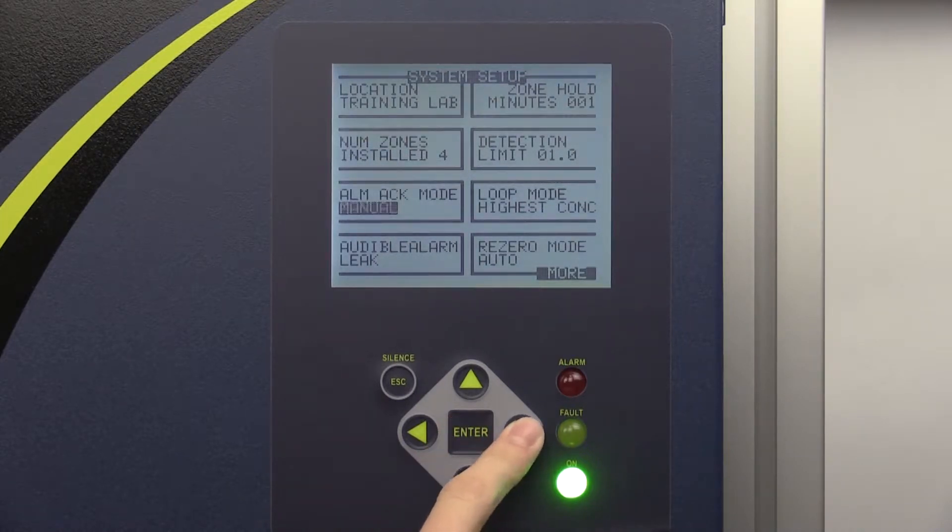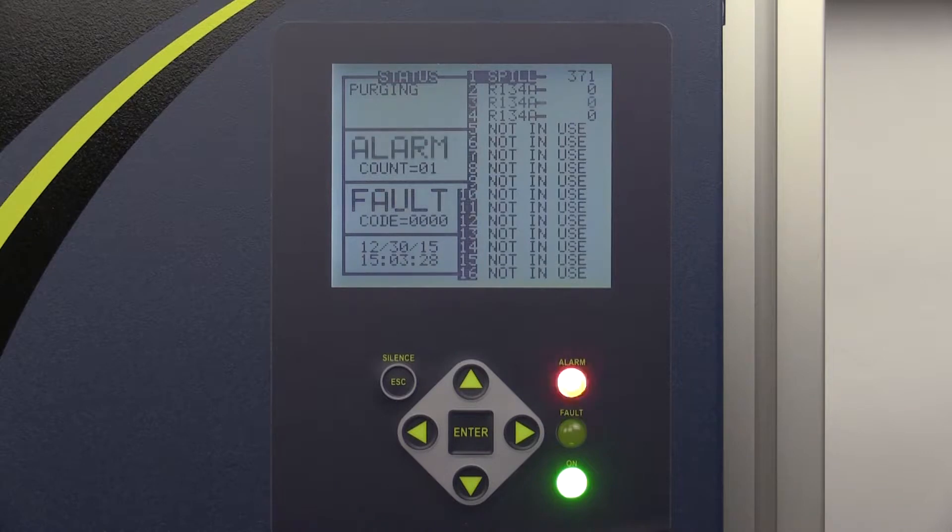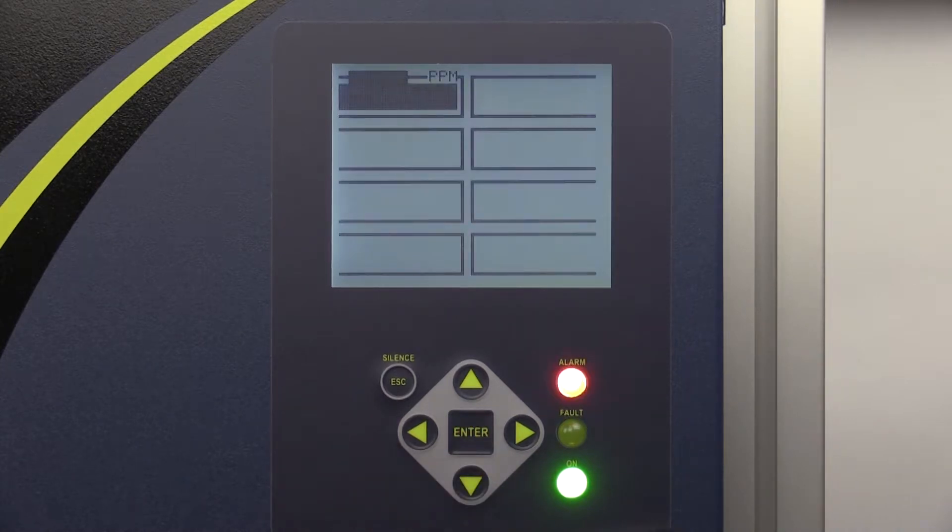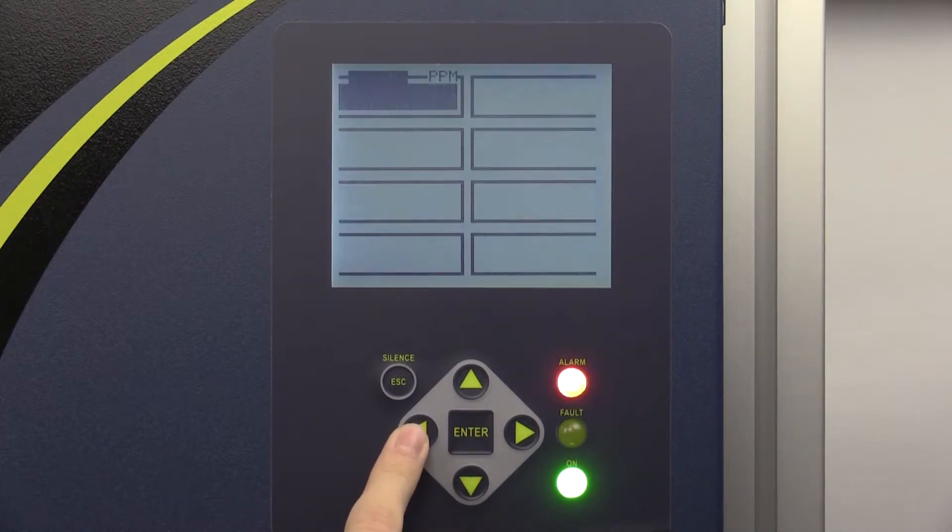When manual is selected, alarms must be manually acknowledged before they will turn off when the PPM reading reaches a safe level. To manually acknowledge an alarm, enter the alarm screen on the main data display. Press enter on the flashing alarm slot and then press the left arrow key to acknowledge the alarm. The next safe level PPM reading will disable the alarm.